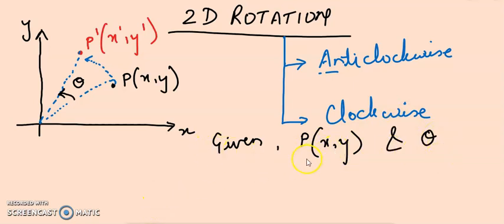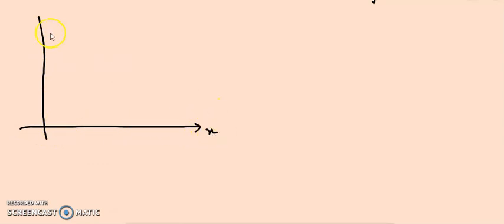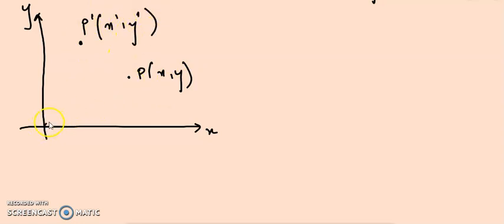What will be given to us is the point P(x, y) and angle theta. Using these, I need to find out the value of P'(x', y') — that is the question mark, what we are trying to find out. So we proceed further and draw this diagram again to start with the derivation. We have a point P(x, y) and resultant P'(x', y'), with angle theta shown.